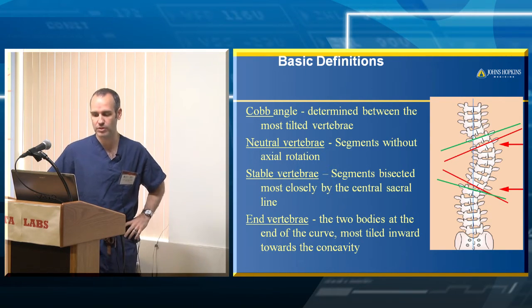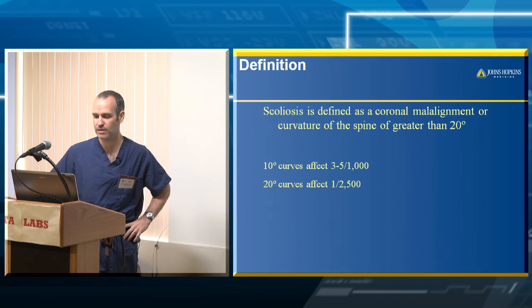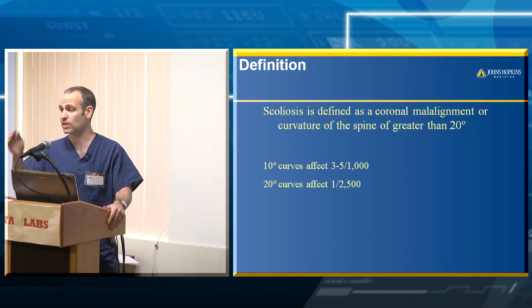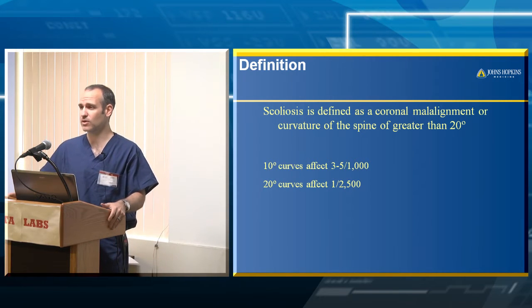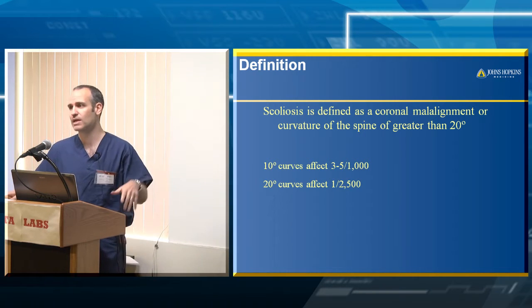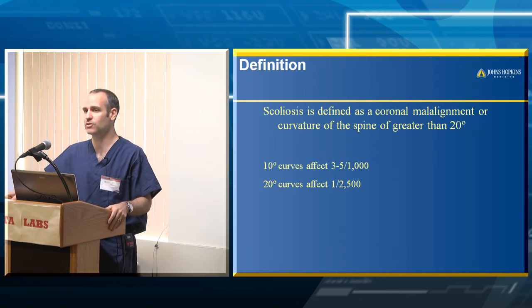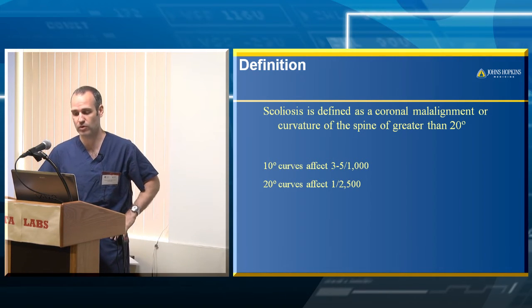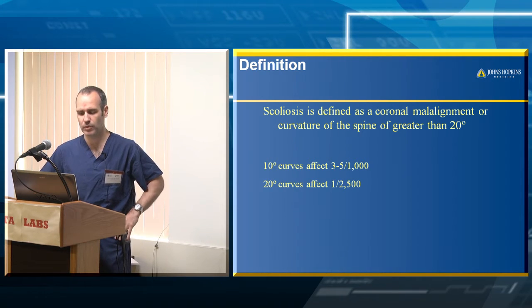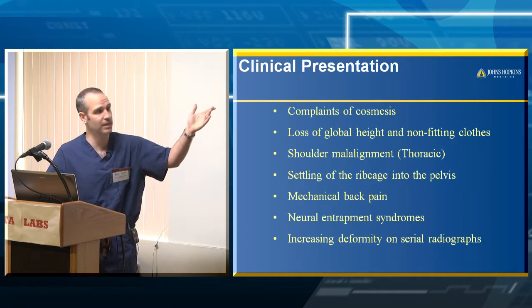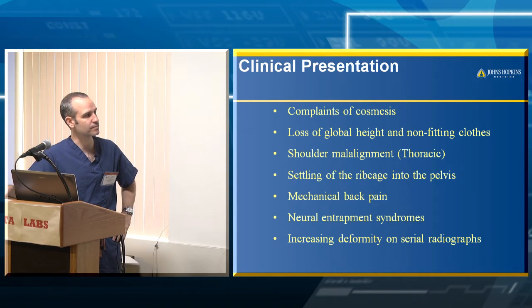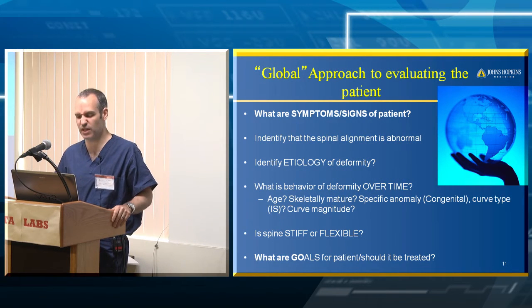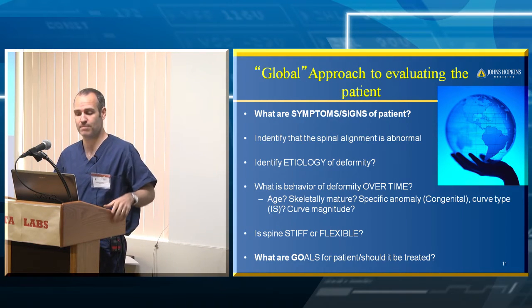Scoliosis really refers to a coronal malalignment. We often say spinal deformity, though patients sometimes don't like hearing they have a 'deformity' when they thought they just had scoliosis. Spinal deformity encompasses all types — scoliosis, lumbosacral junction issues, cervical thoracic kyphosis — as an umbrella term. We generally think of scoliosis as a coronal issue starting around 20 degrees. Presentations range from cosmetic complaints about appearance and clothes fitting oddly, to thoracic malalignment, rib cage issues, mechanical pain, and eventually neurologic problems or progression.